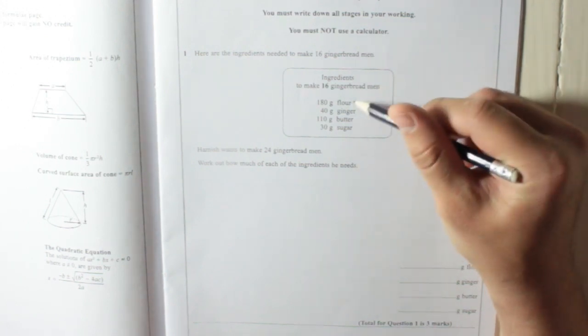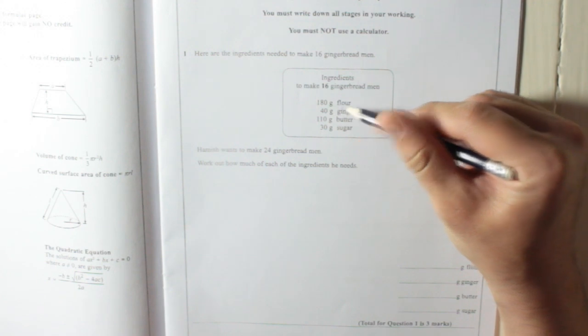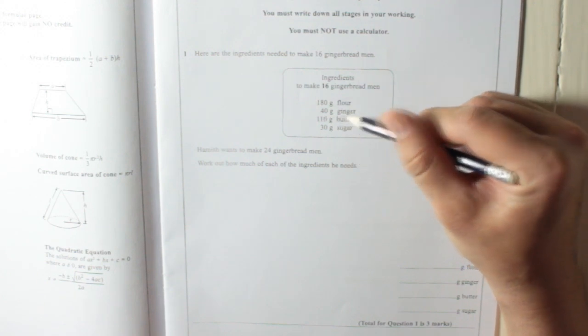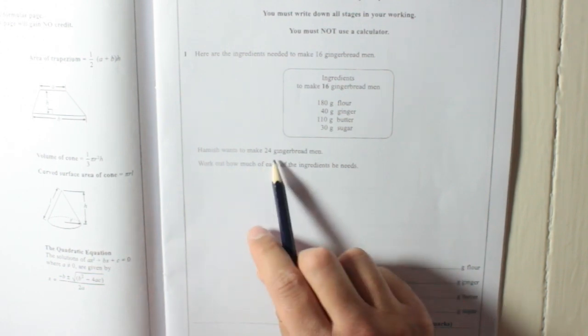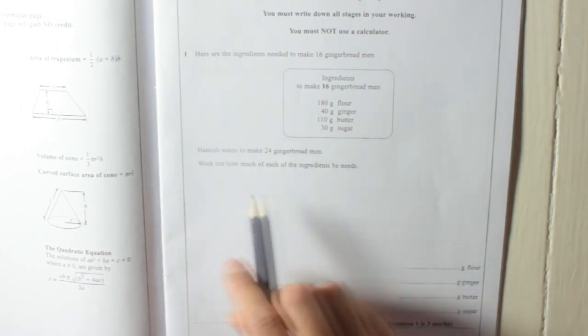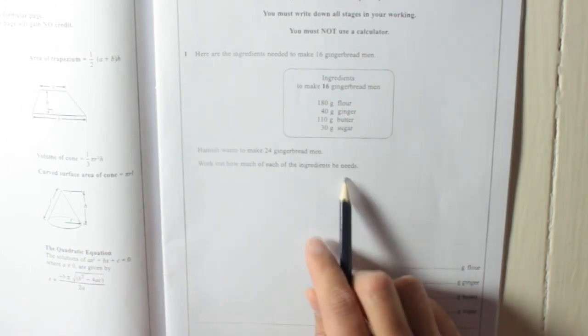Ingredients to make 16 gingerbread men: 180 grams of flour, 40 grams of ginger, 110 grams of butter, and 30 grams of sugar. Hamish wants to make 24 gingerbread men. Work out how much of each of the ingredients he needs.